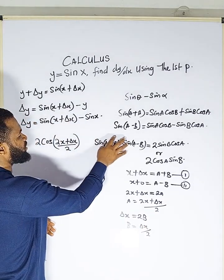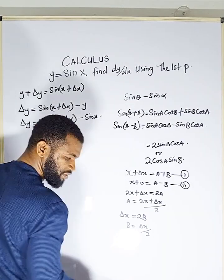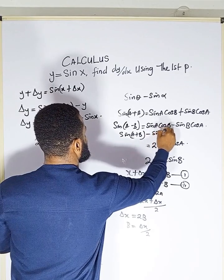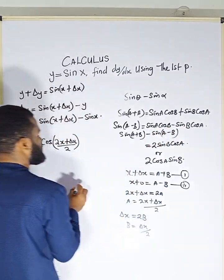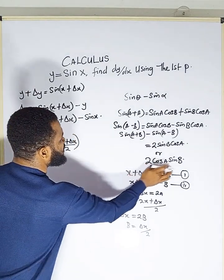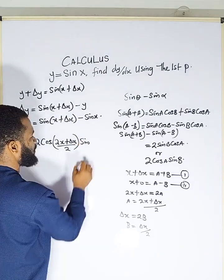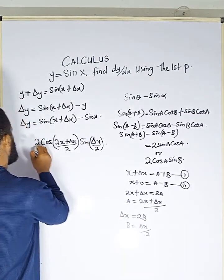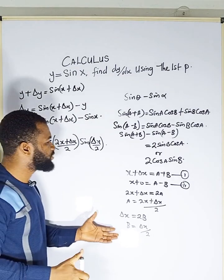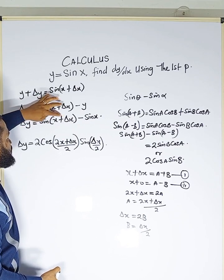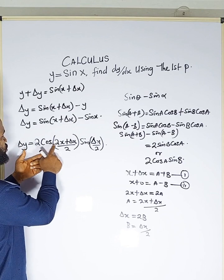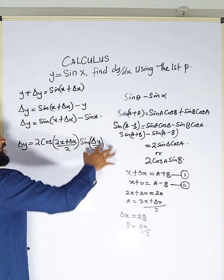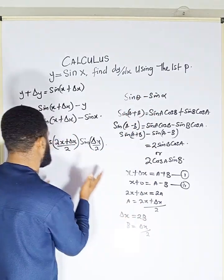So substituting back into sine(A+B) minus sine(A−B) equals 2 cos A sin B, I replace A with (2x + δx)/2 and B with δx/2. Since sine(x + δx) minus sine x is δy, I have successfully shown that δy equals 2 cos((2x + δx)/2) times sin(δx/2).